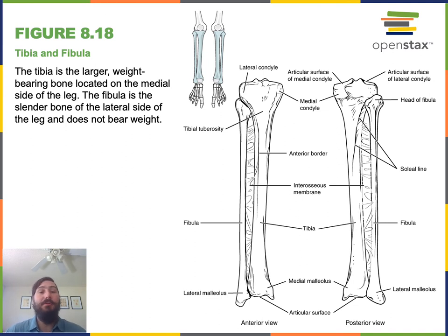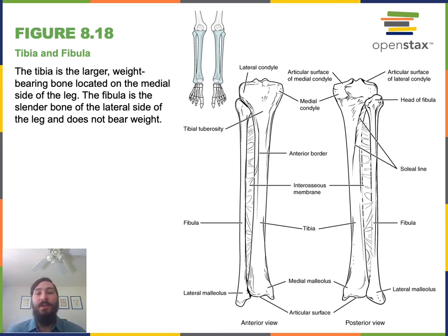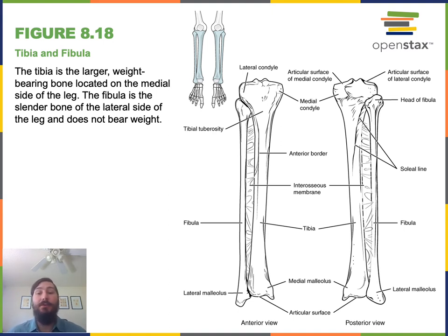In the crural region, commonly known as the leg, there are two long bones. The medial long bone is known as the tibia, which is the weight-bearing bone in the leg. The lateral bone is known as the fibula. The fibula does not support the weight of our body, but it does help to stabilize the ankle joint.